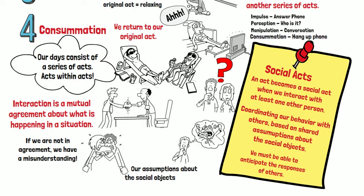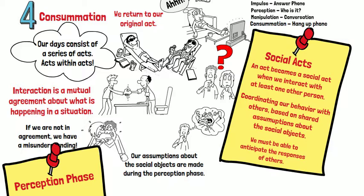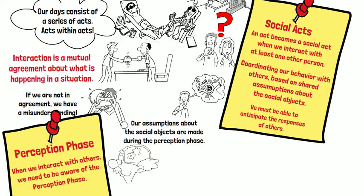When we interact with others, we need to be aware of the perception phase. It is at this stage that we can identify the wrong social objects, resulting in a misunderstanding.